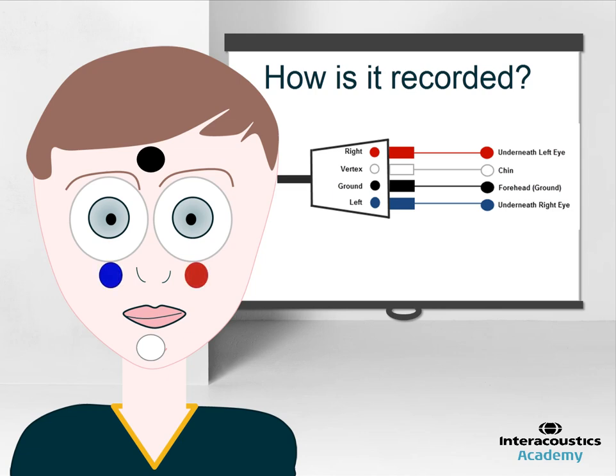Note, the OVEMP is largest when recorded contralaterally, so this is why the right reference electrode is placed underneath the left eye.